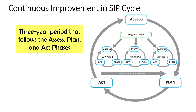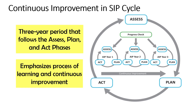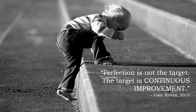One of the major misconceptions in the field is that the SIP is just a mere output we need to submit to the division office. Yes, it is something we submit, but at the end of the day, we want our systems and processes to improve — that is the reason behind it. As Jose Rivera stated in 2015: perfection is not the target; the target is continuous improvement.